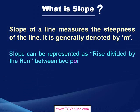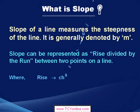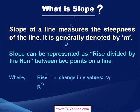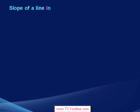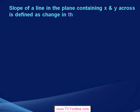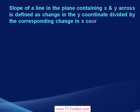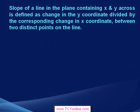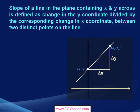Slope also means rise divided by the run. Rise means change in y-coordinates, while run means the change in x-coordinates. So that means the slope of a line is defined as the change in y-coordinates divided by the corresponding change in x-coordinates between two distinct points on the given line.